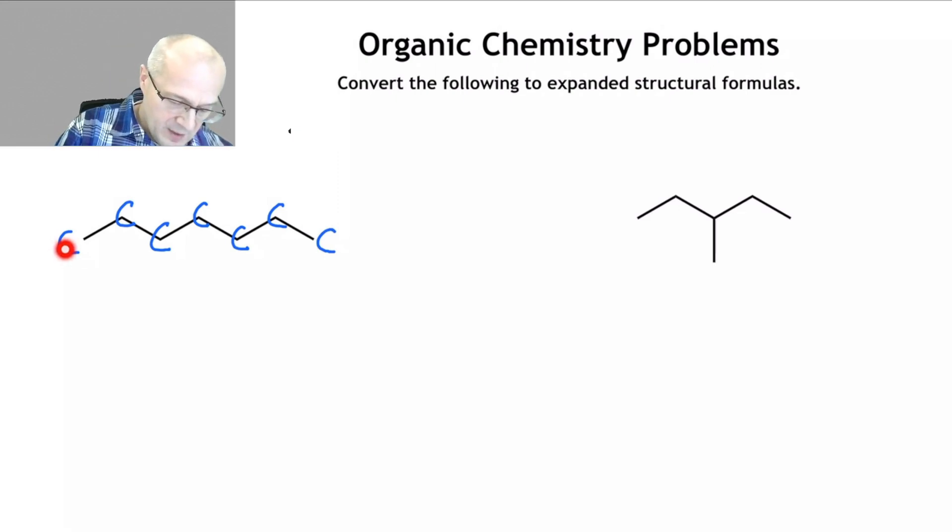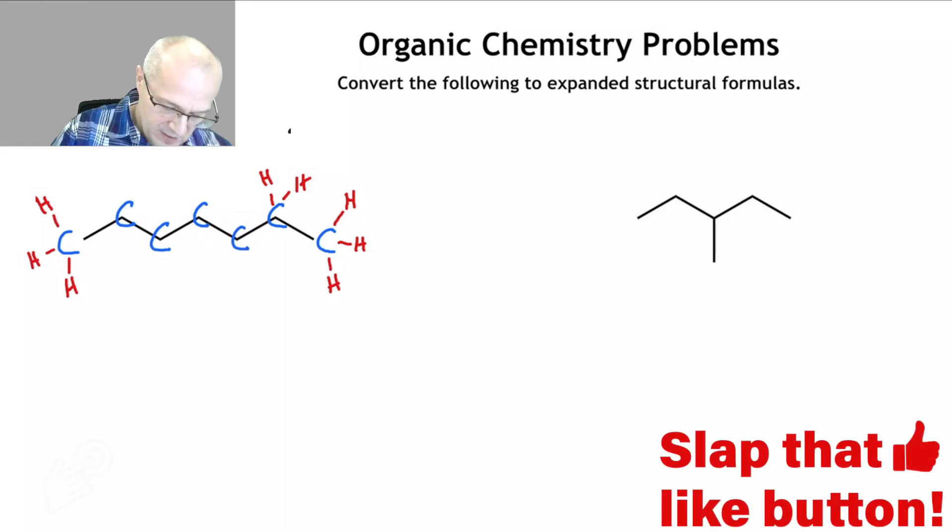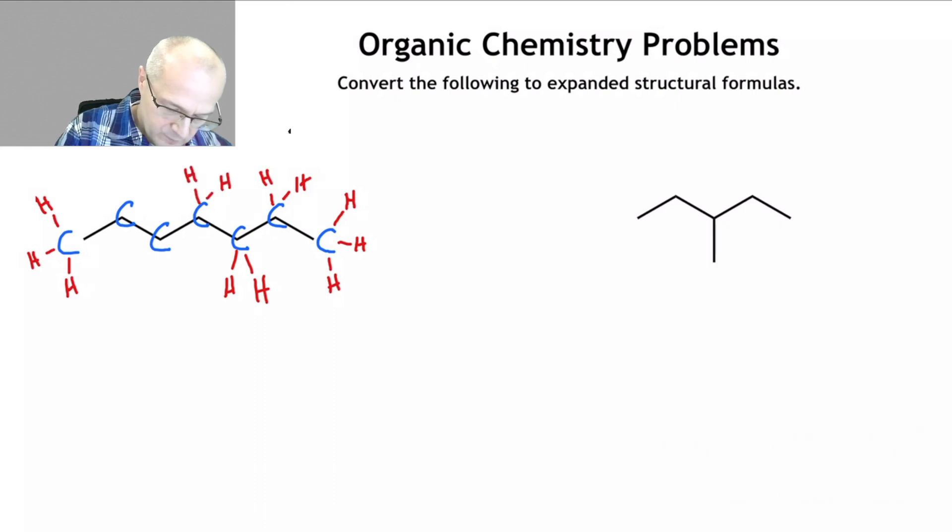So this particular carbon has one bond, has to have three. So they must be to hydrogen because nothing else was shown. Same thing over here. This carbon only has one bond, so it has to have three more. Those three must be to hydrogen because nothing else was shown. This carbon has one, two bonds, has to have four. So it needs two more. They must be to hydrogen. Same thing here. One, two, needs to have two more. One, two, has to have two more. One, two. Again, has to have four, so two more. One, two, has to have four, so again, two more. There you go.